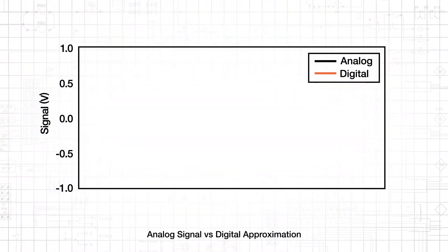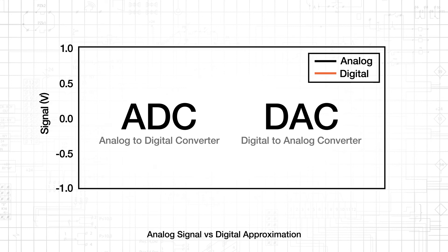Mixed signal devices simply combine functionality from the analog and digital devices that we've already discussed. However, we do need to mention analog-to-digital converters, or ADCs, and digital-to-analog converters, or DACs.